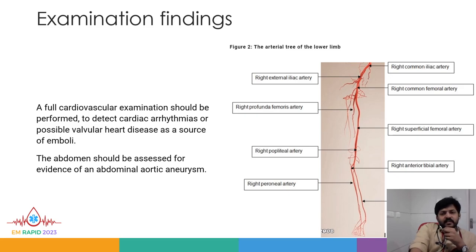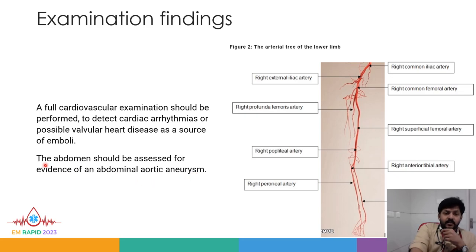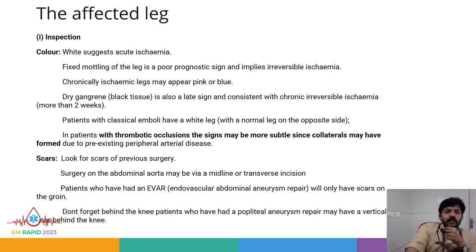A full cardiovascular examination should be performed to detect cardiac arrhythmias or possible valvular heart disease as a source of emboli. The abdomen should also be assessed for evidence of abdominal aortic aneurysm — this is important and something most doctors miss. On the affected leg, you will do inspection, palpation, and auscultation.